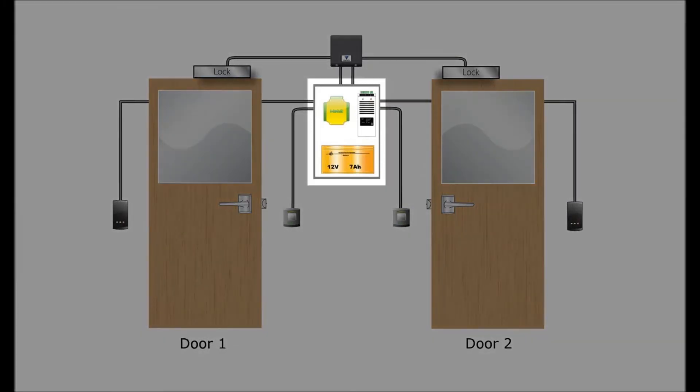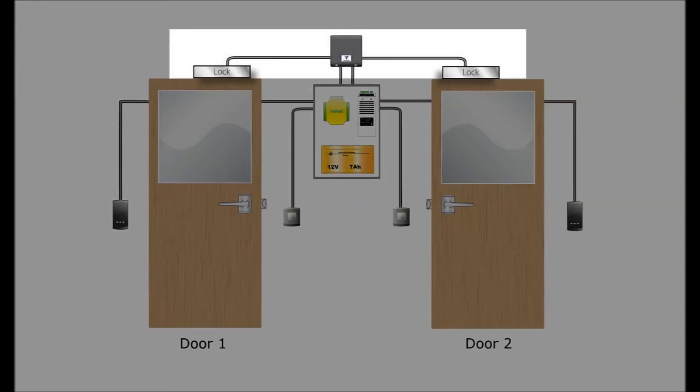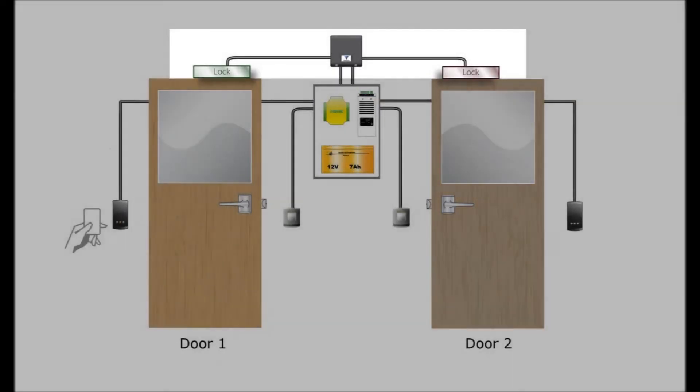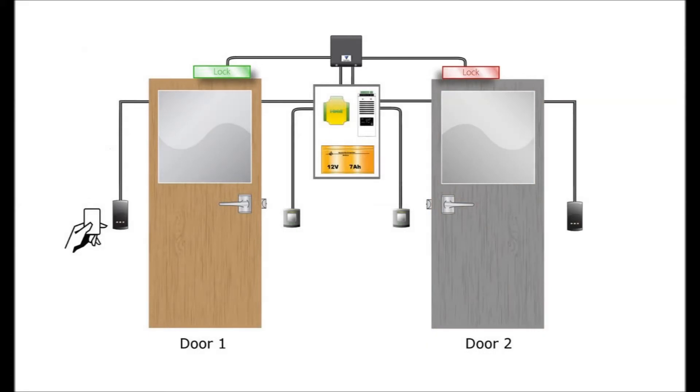Net 2 will determine the access when a token is presented, but the interlock will only open the relay provided the two doors are in the correct state. So, provided door 2 is closed, when a token is presented to door 1, door 1 will unlock and can be opened.